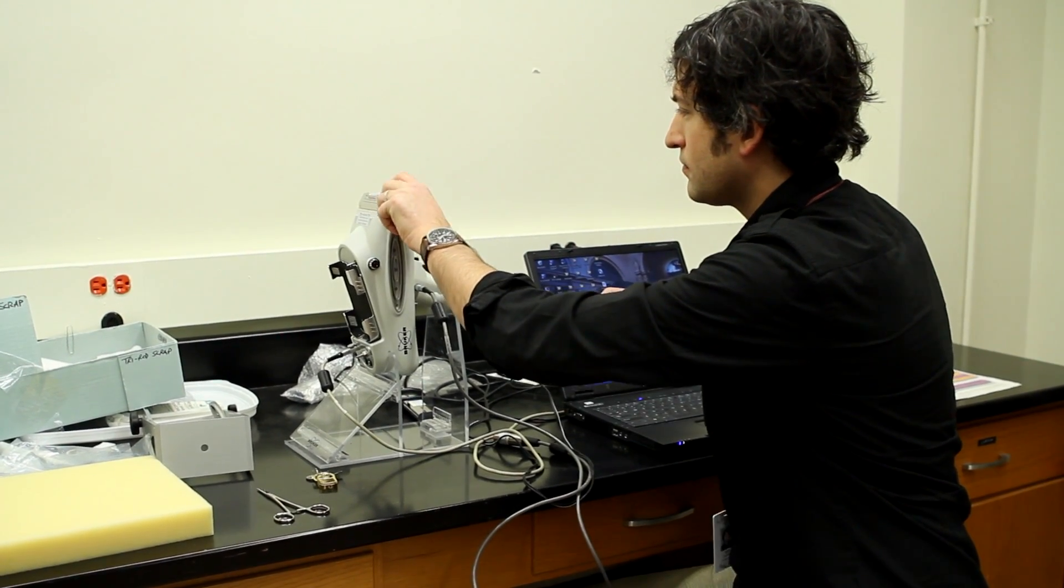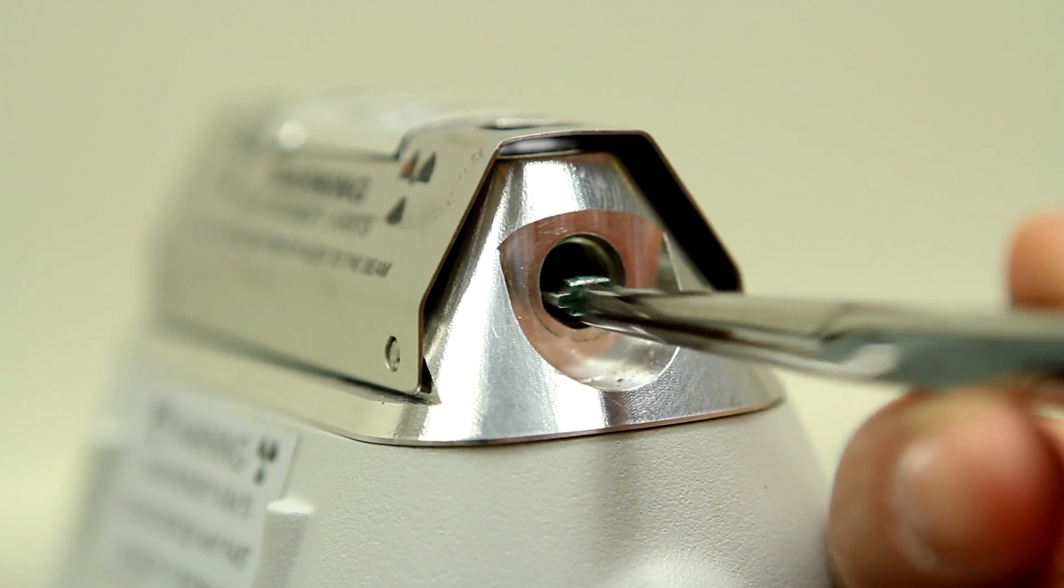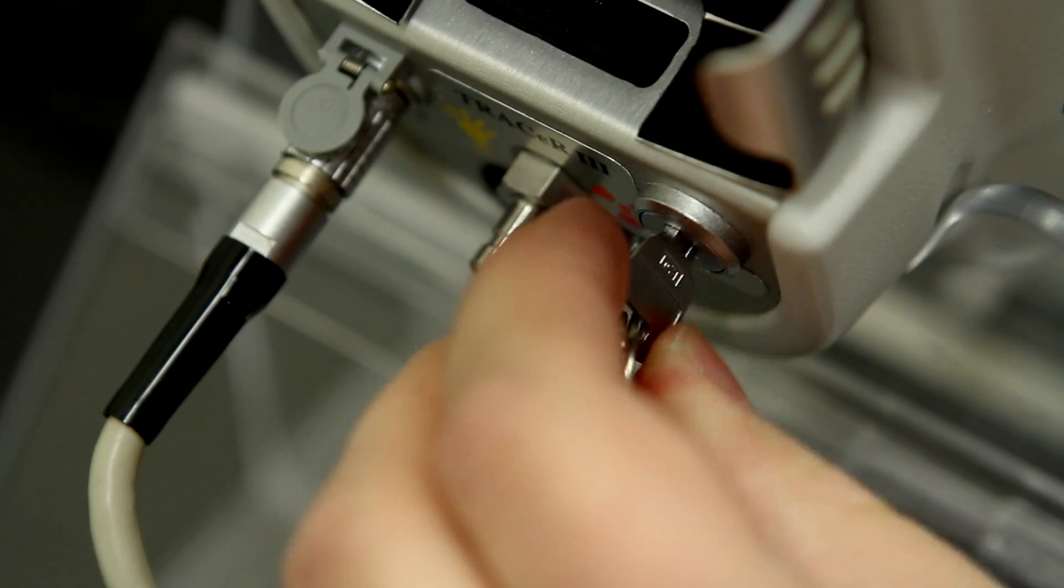So this is a portable x-ray fluorescence spectrometer which we use to measure the chemical composition of objects here at the museum.